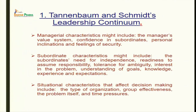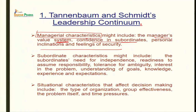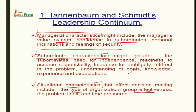Tannenbaum and Schmidt's leadership continuum involves three sets of characteristics. Managerial characteristics include the manager's value system, confidence in subordinates, and personal inclination and feelings of security. Subordinate characteristics include need for independence, readiness to assume responsibility, tolerance for ambiguity, interest in the problem, understanding of goals, and knowledge. Situational characteristics affecting decision making include type of organization, group effectiveness, complexity of the problem, and time pressures.